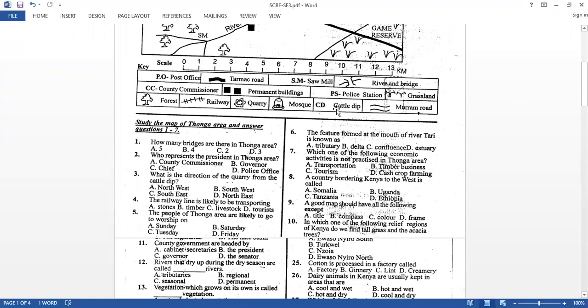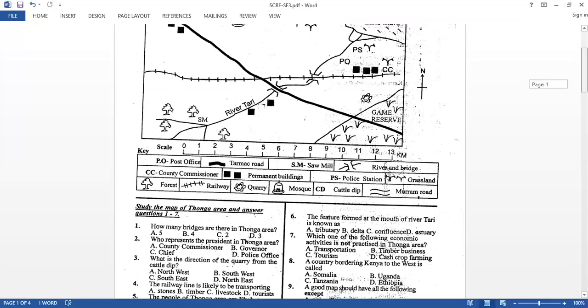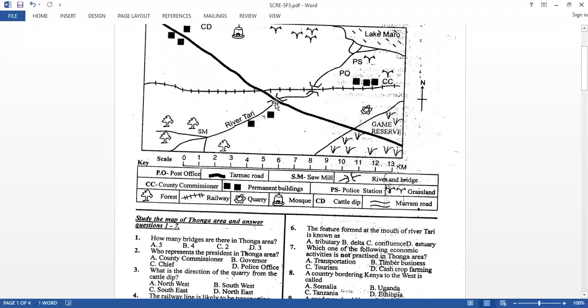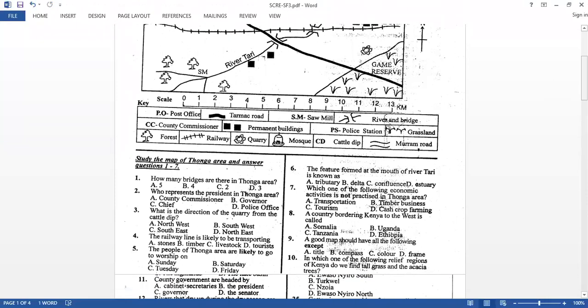Then cattle dip. There is animal keeping or livestock keeping. We are going to say farming. Police station, law and order. The work of the police mainly is to maintain law and order in the area. Then there is grassland and also Maram Road, river and bridge. Then Tamak Road. The first question: How many bridges are there in Thonga area? So do you know how to count? Let's count together. You have the first one which is here and the second one is here. So we have two bridges in that area. Most of you got that correct.